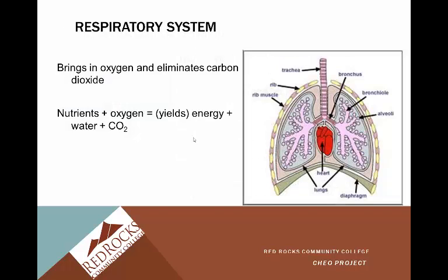The respiratory system is separate but really so interdependent on the cardiovascular system. You'll often hear 'cardiopulmonary,' and pulmonary is another term for respiratory. The blood goes through the heart, through the right side, and then into the lungs before getting back into the left side. The purpose of the respiratory system is bringing in oxygen and eliminating carbon dioxide. Nutrients plus oxygen gives energy, plus water, plus the byproduct of carbon dioxide, which we breathe out.